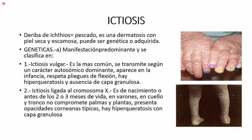Otra patología es la ictiosis. Ictiosis deriva del griego ictios, que quiere decir pescado; o sea, el paciente tiene una piel como la del pescado. Es una dermatosis con piel seca y escamosa, puede ser genética o adquirida, pero más es genética. Entre las genéticas, predominan los genes dominantes. Se clasifica en ictiosis vulgar, la más común, que se repite según un carácter autosómico dominante.